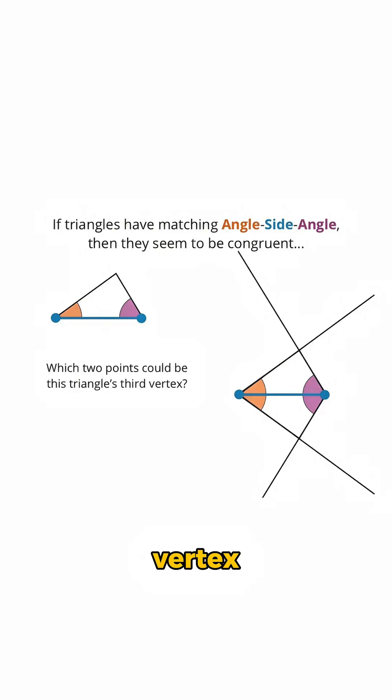Nicely done. So the triangle's third vertex could be up here, where these two lines intersect, or it could be down here, where these two lines intersect.